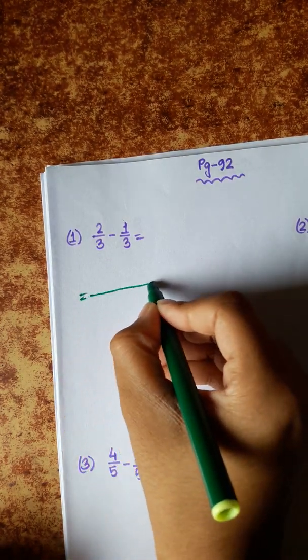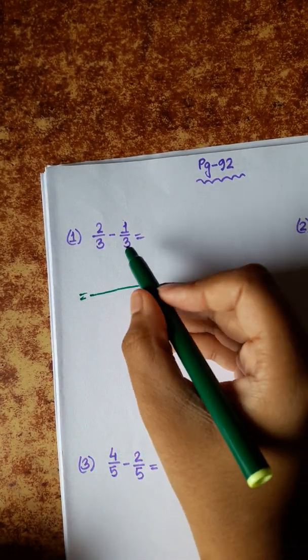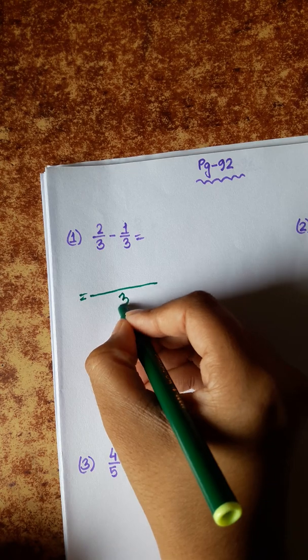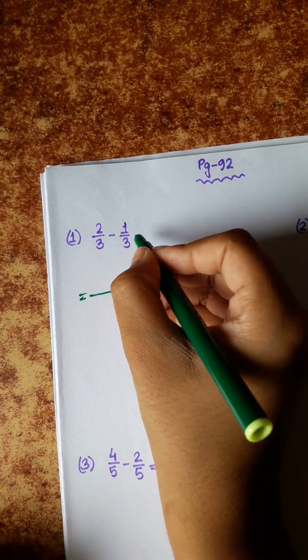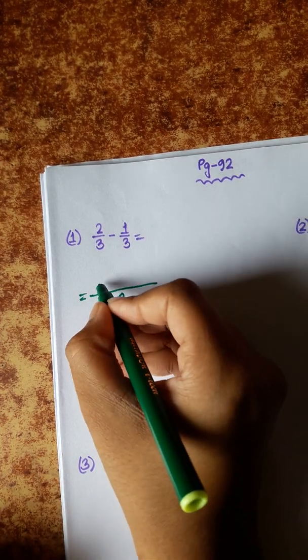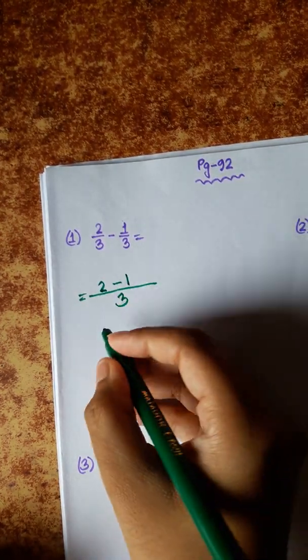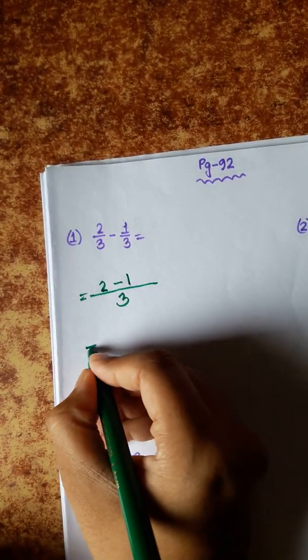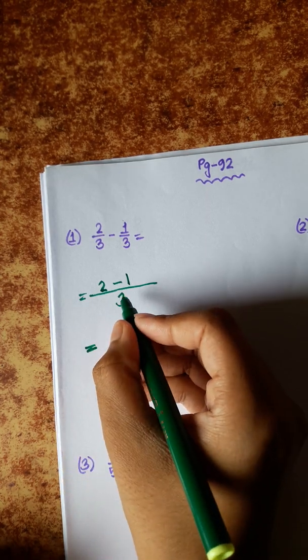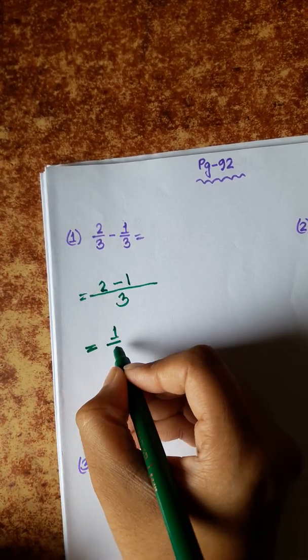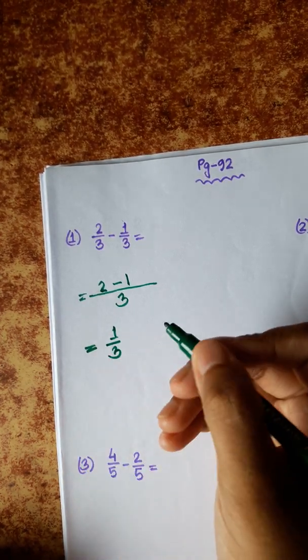For addition and subtraction of fractions, when the denominator is the same, we keep the denominator and operate on the numerators. For example: 2 minus 1 equals 1, so the answer is 1 by 3.